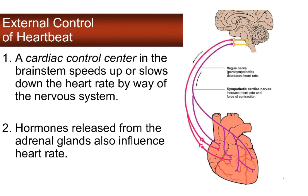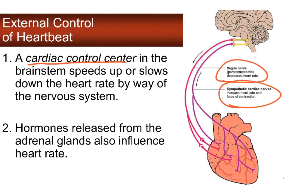That's internal control of heartbeat. External control of the heartbeat involves the medulla oblongata in the brain stem, where there is the aptly named cardiac control center that speeds up or slows down the heart. It's part of the autonomic nervous system — there's sympathetic innervation which leads to increased heart rate, and then parasympathetic that slows the heart rate down.